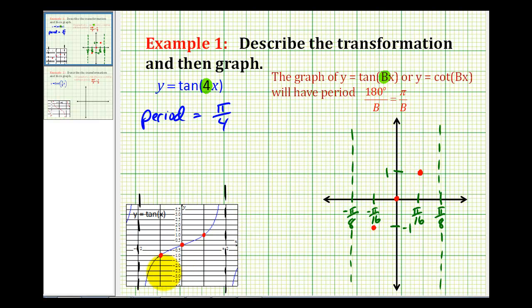Again, following the pattern of the basic tangent function. The first fourth was negative one. The second fourth was zero. The third fourth was one. And then we have our vertical asymptotes at the left and right of the given interval.